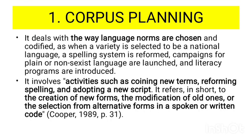Corpus planning deals with the corpus or the body of the language — for example, the way language norms are chosen and codified, how a spelling system is reformed, how campaigns for plain or non-sexist language are launched, and literacy programs are introduced. The main functions of corpus planning are coining new words, reforming spellings, and adopting a new script. It refers to the creation of new forms or new words while modifying older ones, and the selection from alternative forms in a spoken or written code, as said by Cooper in 1989.